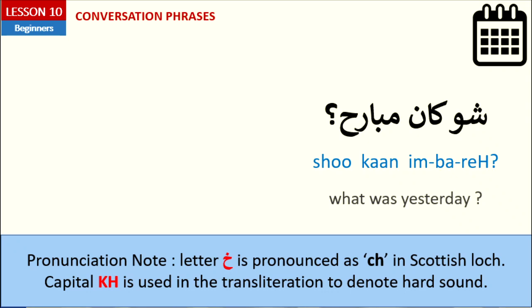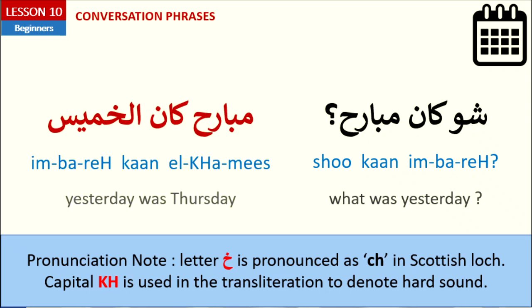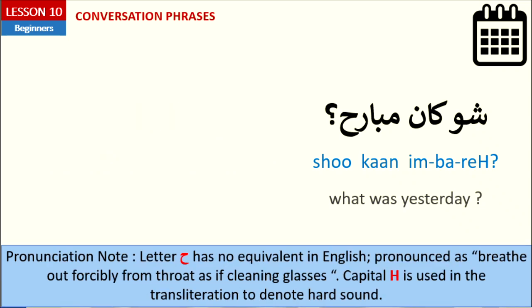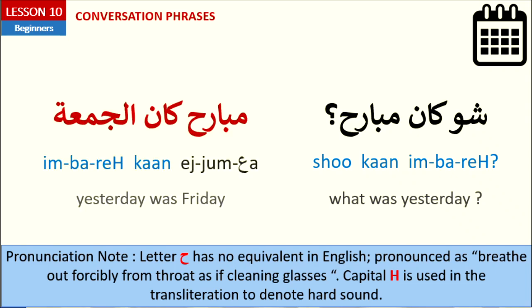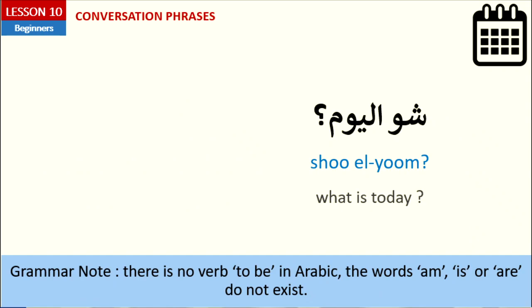What was yesterday? Yesterday was Thursday — مبارح كان الخميس. شو كان مبارح — 'What was yesterday?' مبارح كان الجمعة — Yesterday was Friday. شو اليوم — 'What is today?'